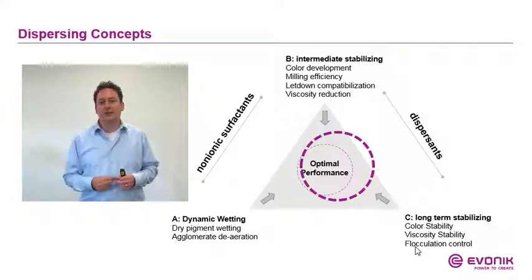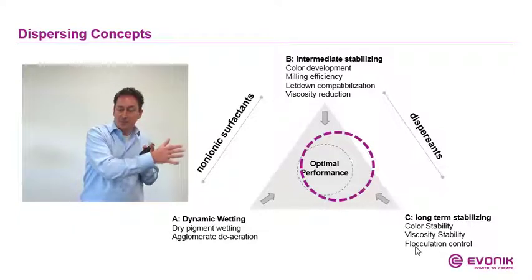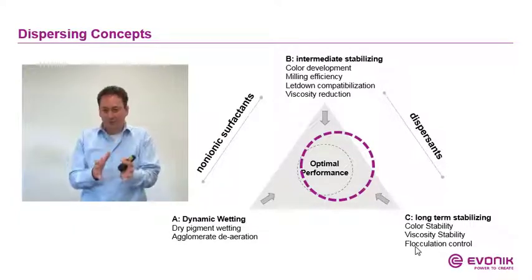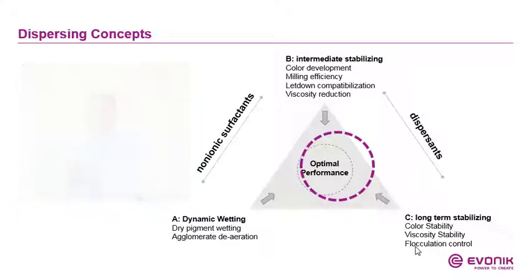So we have these three different steps: dynamic pigment wetting, the grinding step, and stabilization. Those were the basics about wetting and dispersing — pigments, color, and so on. In the next video, we will go into more detail on wetting, grinding, and stabilization. See you later. Bye.